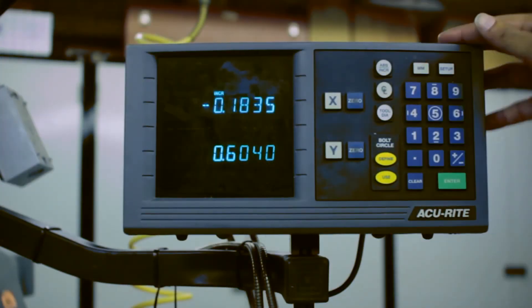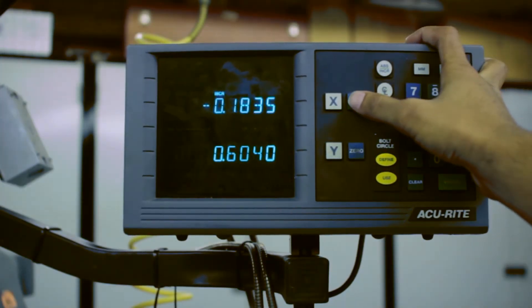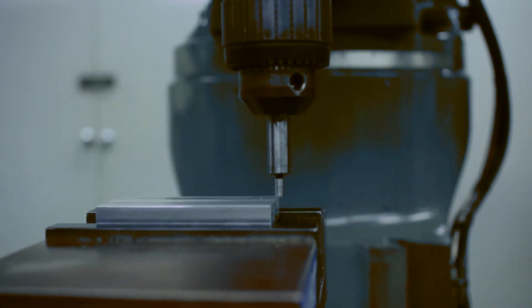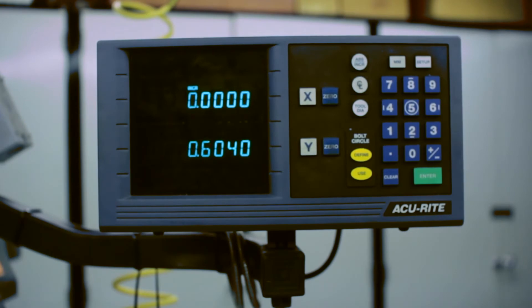When the edge finder kicks out, zero out the respective axes. Move the edge finder out of the way. Now offset your zero a hundred thousandths of an inch.